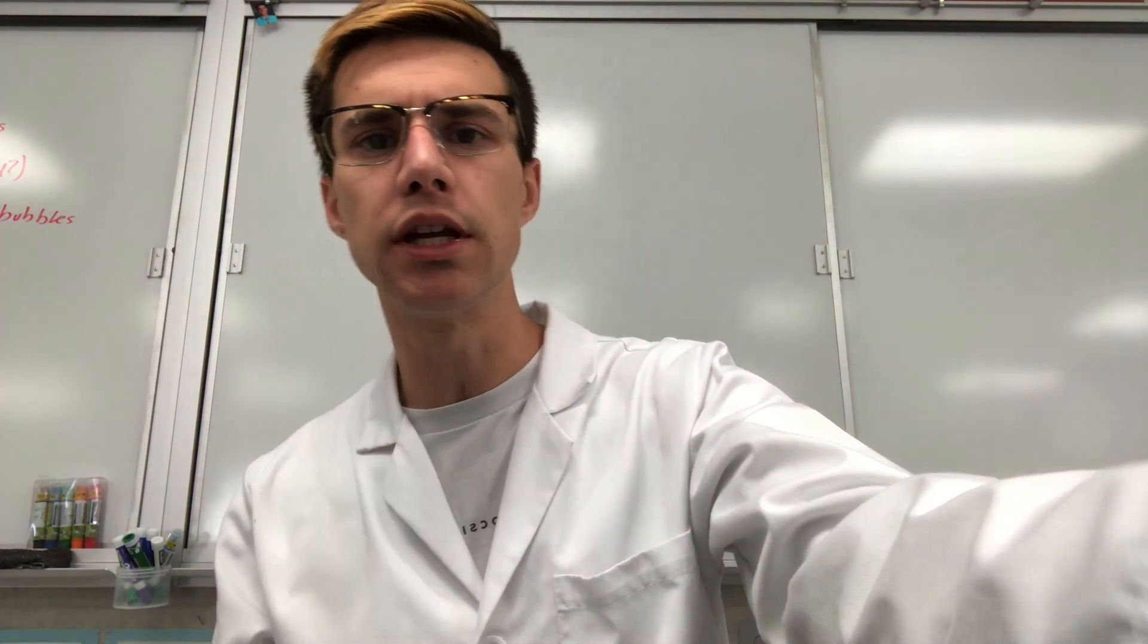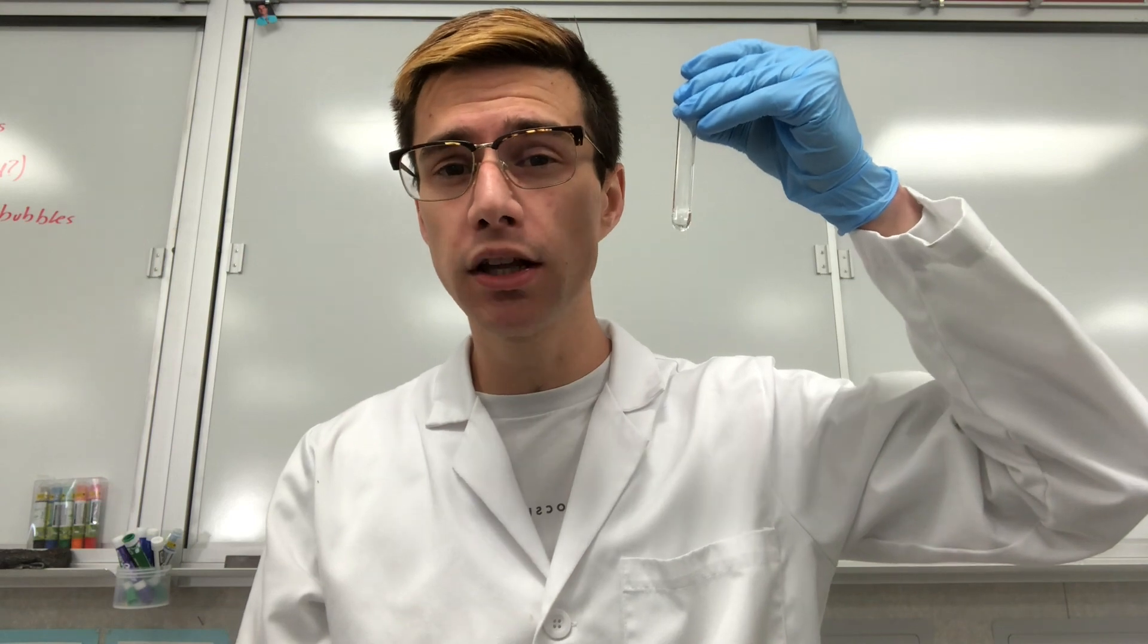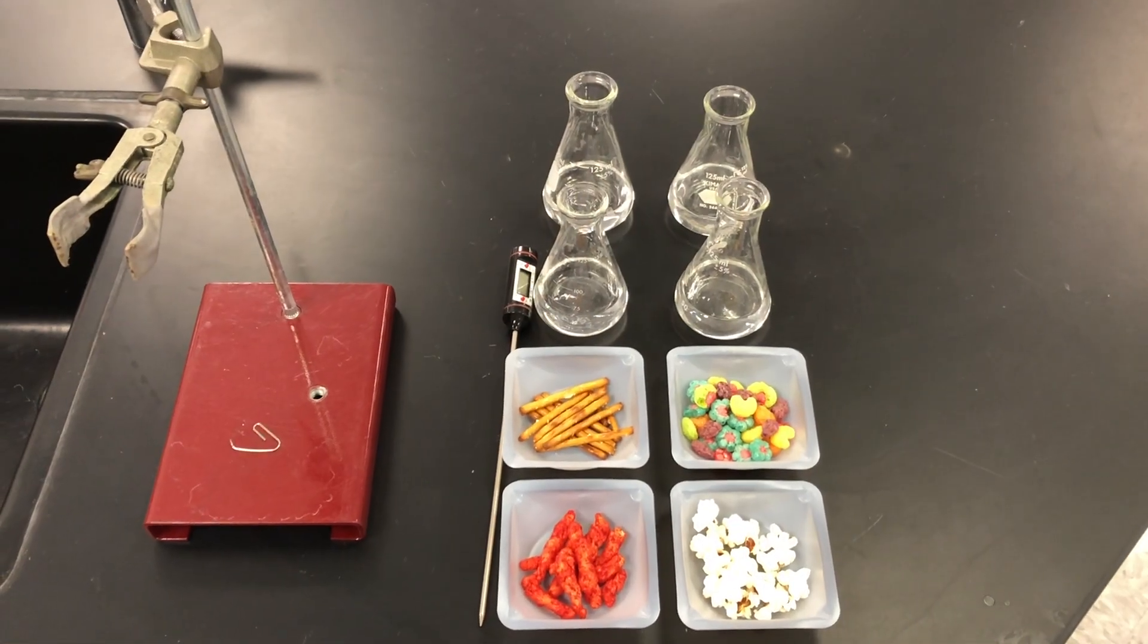So where does the term calorie actually come from? Well, calorie is a standardized unit that we use for measuring the amount of energy in something. What a calorie really is, is the amount of energy that's needed to heat up one milliliter of water by one degree Celsius. This right here is one milliliter of water. If we increase the temperature of this by one degree Celsius, the amount of energy that's requiring is one calorie.